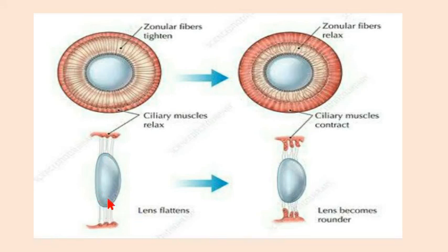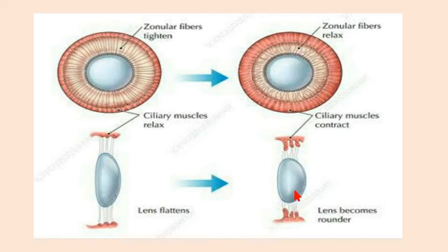When the lens becomes rounder, it is because of ciliary muscle contraction and zonular fiber relaxation. When ciliary muscles contract, the lens becomes rounded — fatter or thicker in shape. When ciliary muscles relax, the lens becomes flattened in shape.